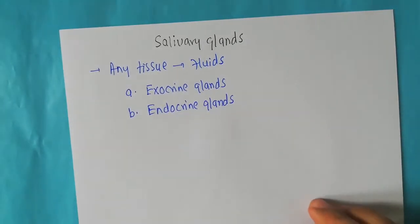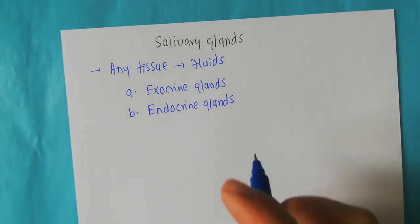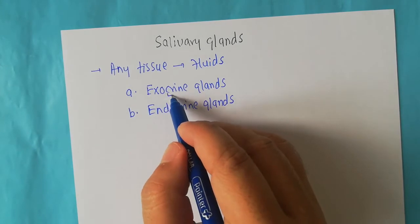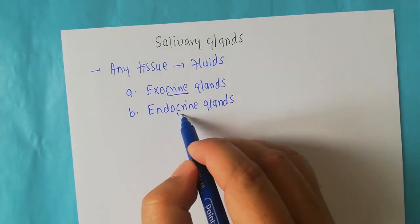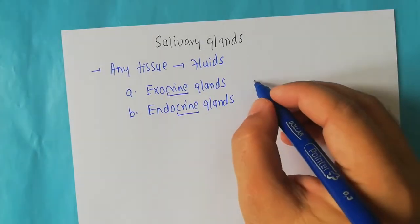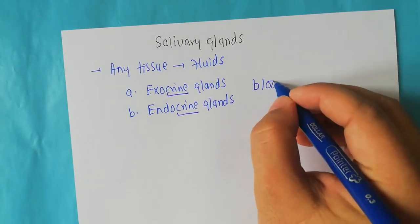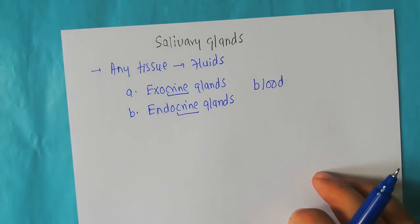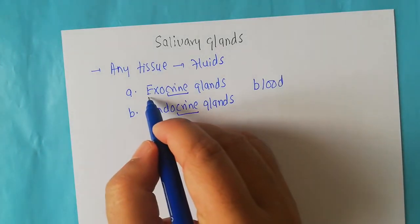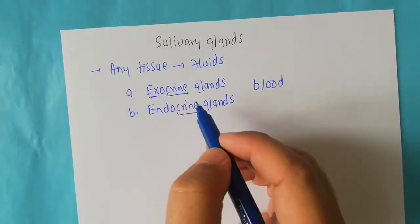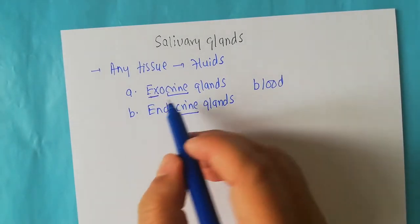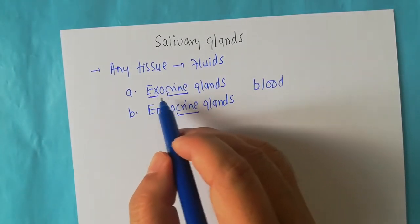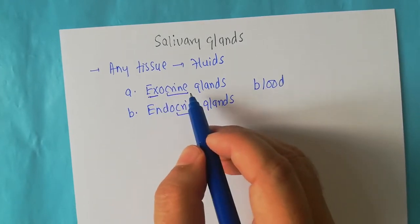If you look at the exocrine and endocrine glands, the common term between the two is 'crine', and this term 'crine' actually means to secrete — meaning these two kinds of glands have something to do with secretion. The term 'exo' actually means outside, so exocrine means outside — releasing secretions outside the blood.